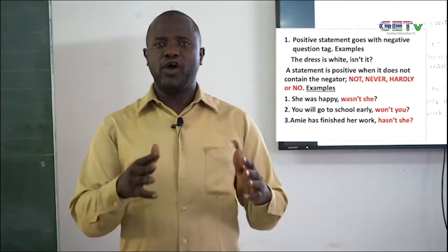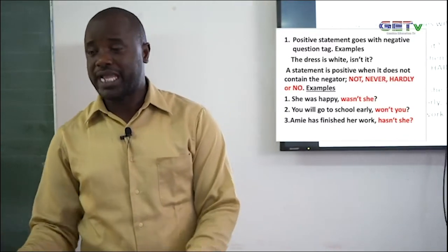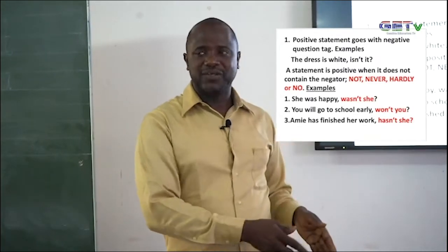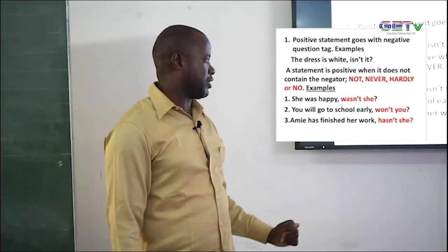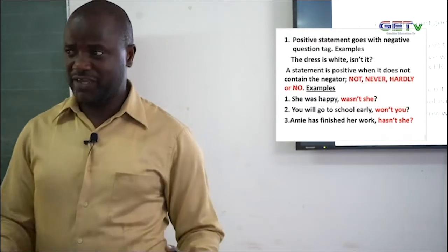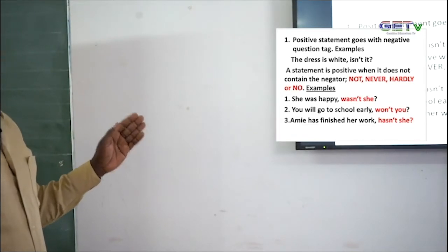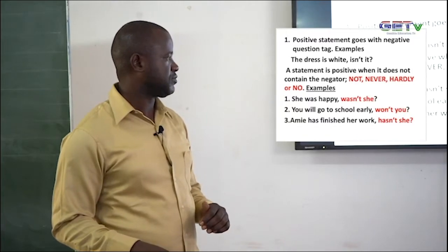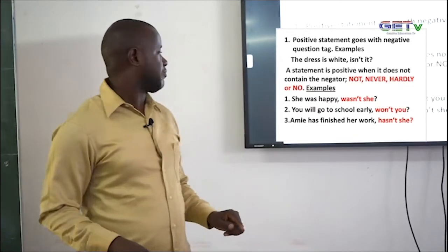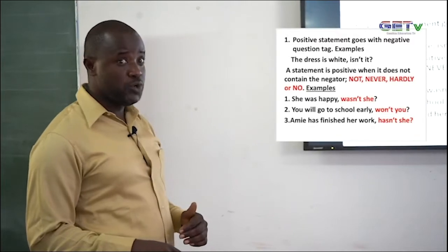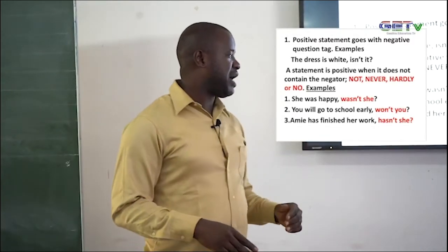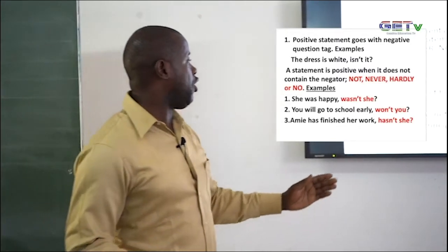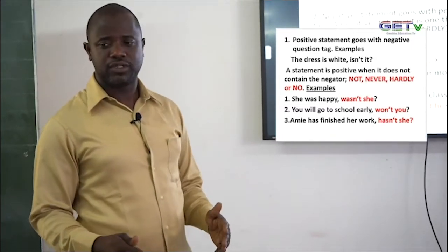There should always be an opposite between the statement and the question tag: if the statement is positive, the tag is negative; if the statement is negative, the tag is positive. Examples: 'She was happy, wasn't she?' — 'You will go to school early, won't you?' — 'Ami has finished her work, hasn't she?' All the statements given are positive, and the tag questions are in negative form.